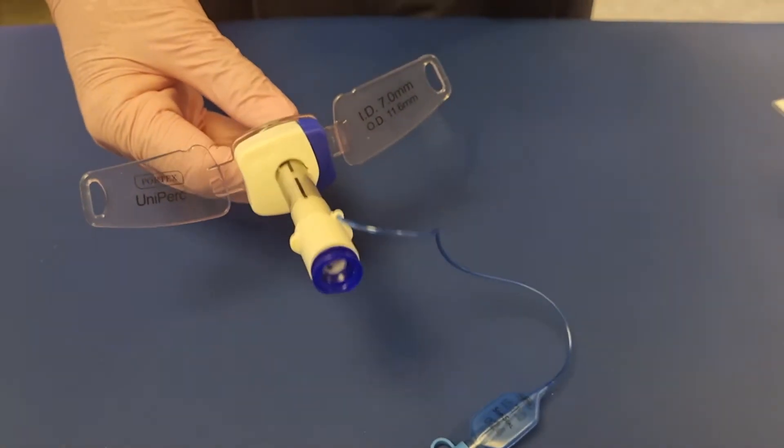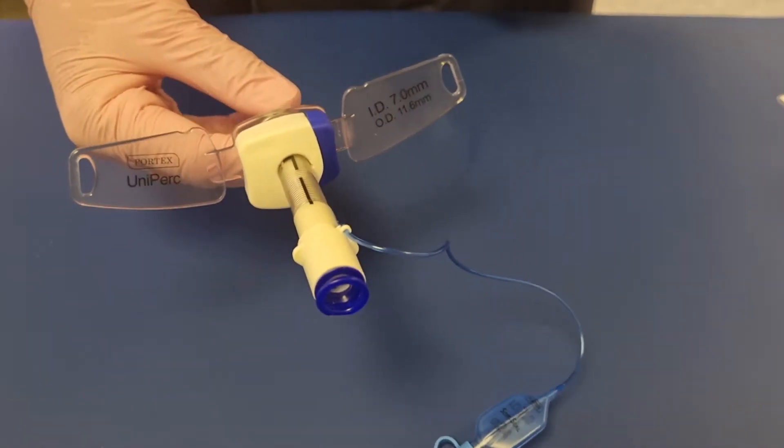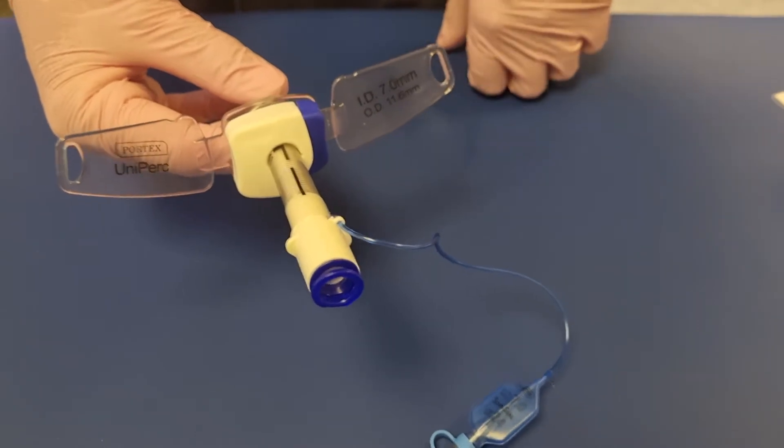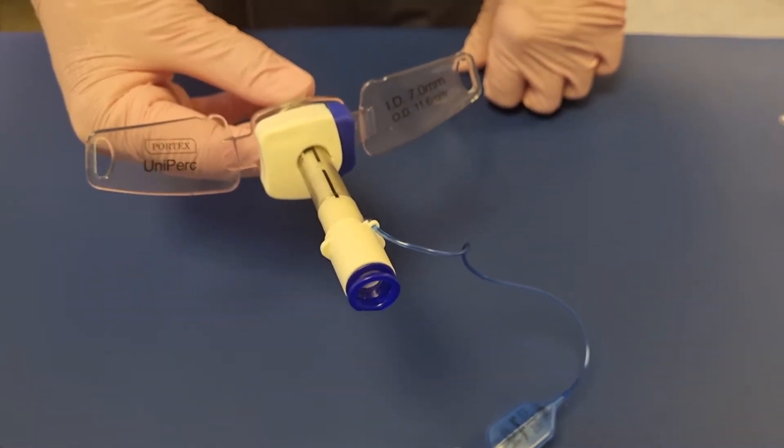This is an example of a PORTEX Uniperc tracheostomy tube. It's an adjustable flange tube which we use for patients who have a surgical tracheostomy.